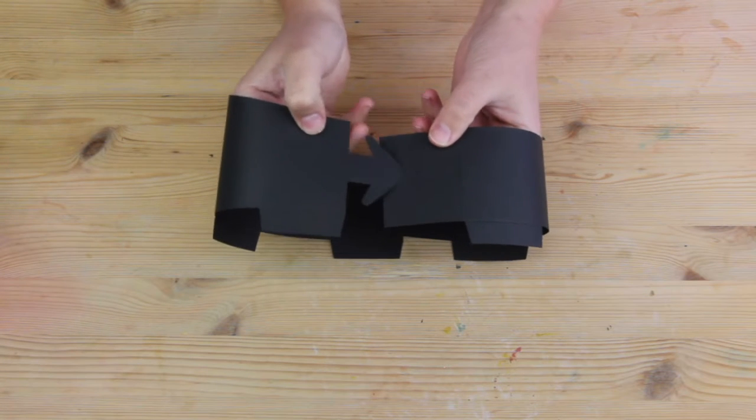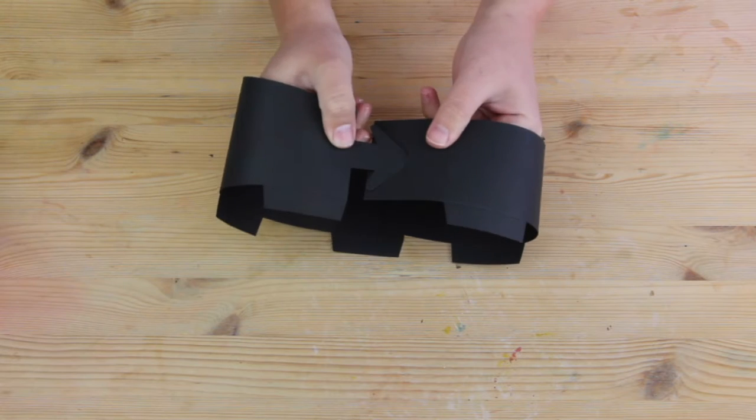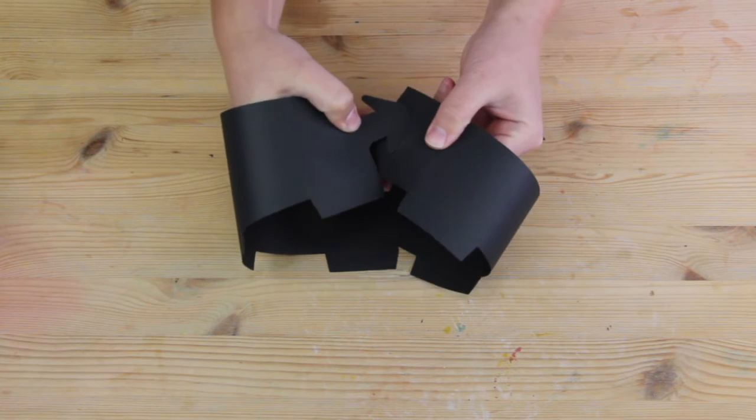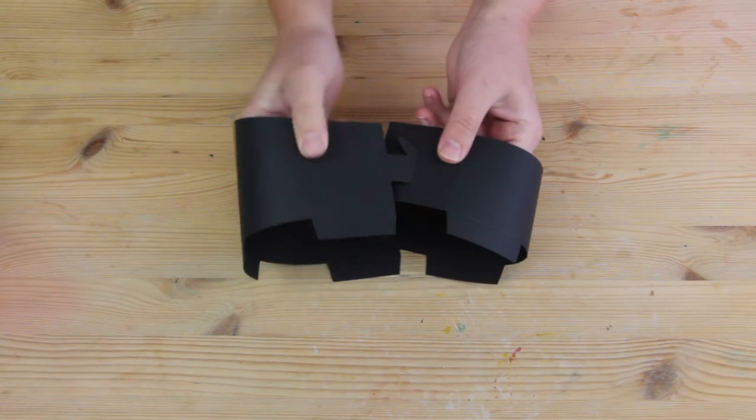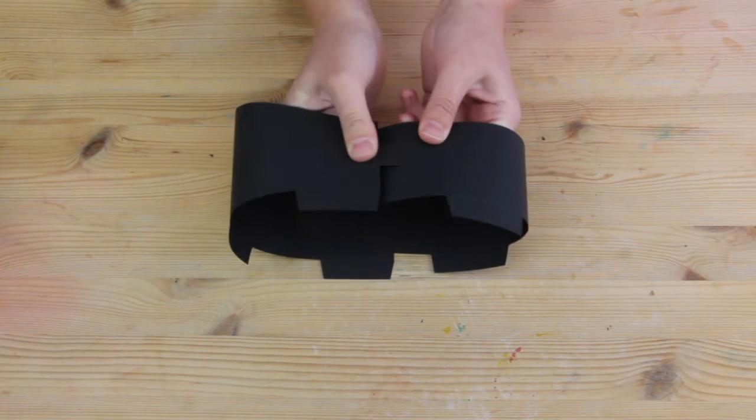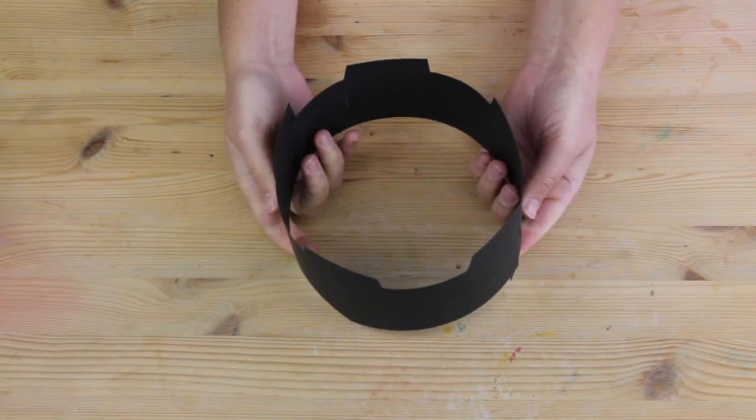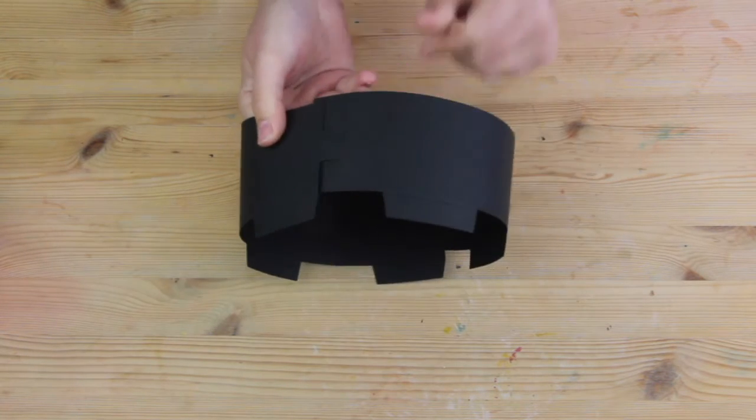You can decide to slide it into the end slit or the next one along, which makes it adjustable. If your students are younger, they may need a tighter hat, so you can pop it on the further along one.